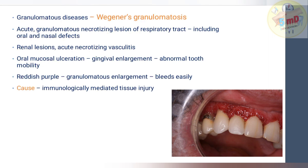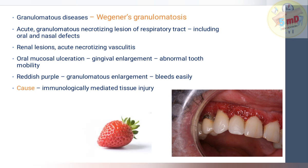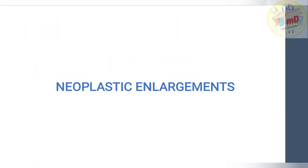Wegener's granulomatosis shows a classic gingival finding that resembles a strawberry — it is called strawberry gingivitis. It is an acute granulomatous necrotizing lesion of the respiratory tract including oral and nasal defects. Renal lesions and acute necrotizing vasculitis are also seen. It is a chronic granulomatous disease. Oral mucosal ulceration, gingival enlargement, and abnormal tooth mobility are also seen. The gingiva is reddish-purple and bleeds easily, caused by immunologically mediated tissue injury.